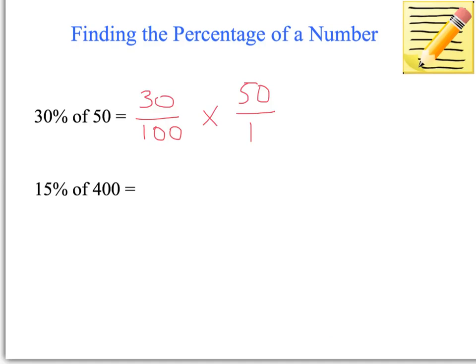Then cancelling out, well, I can divide 100 by 50 and 50 by itself. So that equals 30 over 2. And so that is 15. So 30% of 50 is actually 15.